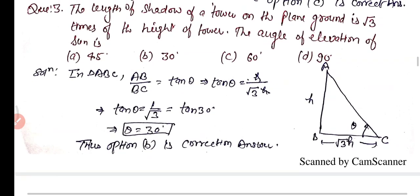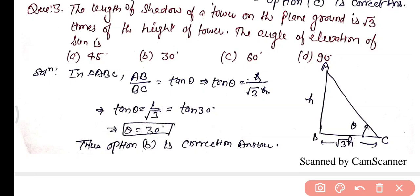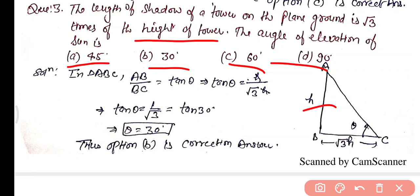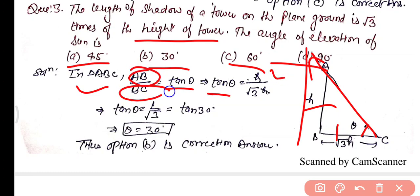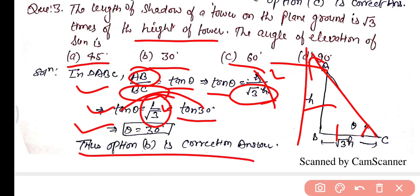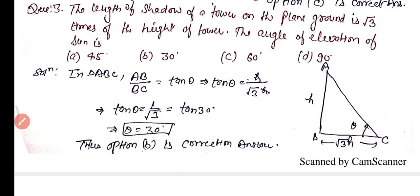Question number 3: The length of the shadow of a tower on plain ground is √3 times the height of the tower. Find the angle of elevation of the sun. Let height AB = H, so shadow BC = √3H. In triangle ABC, tan θ = AB/BC = H/(√3H) = 1/√3. Since tan 30° = 1/√3, we get θ = 30°. So option B is the right answer: the angle of elevation of the sun is 30°.